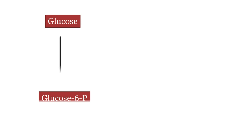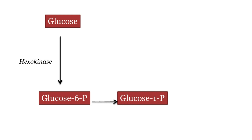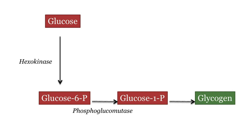Here is a diagram to summarize the synthesis and degradation steps. This is just a summary and does not show all the details. Glucose is converted to glucose-6-phosphate by hexokinase — this is the first step of glycolysis. Glucose-6-phosphate is then converted to glucose-1-phosphate by phosphoglucomutase. After a series of steps, glucose-1-phosphate is converted to glycogen, and the major enzyme here is glycogen synthase.